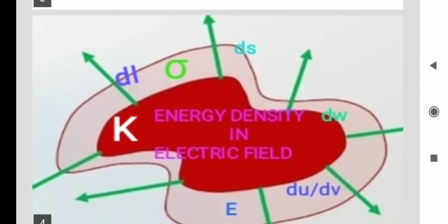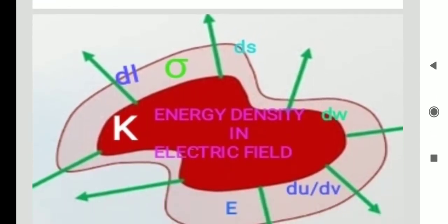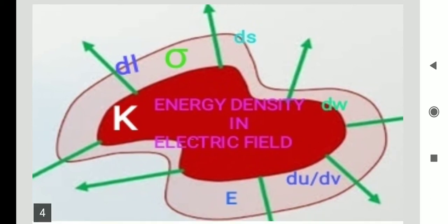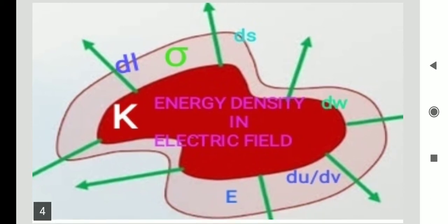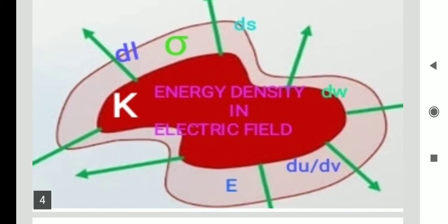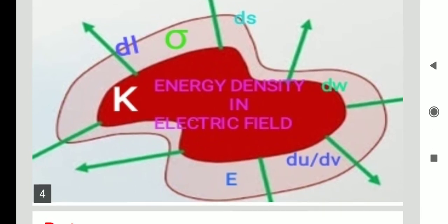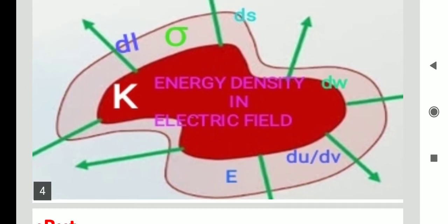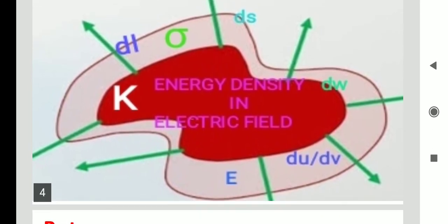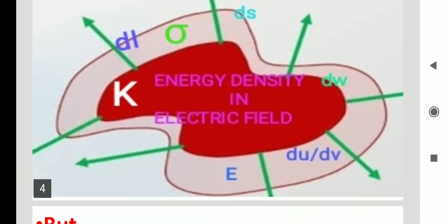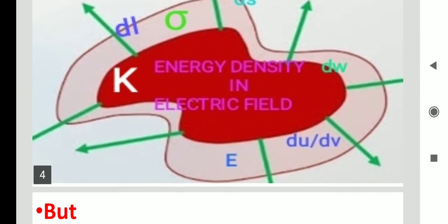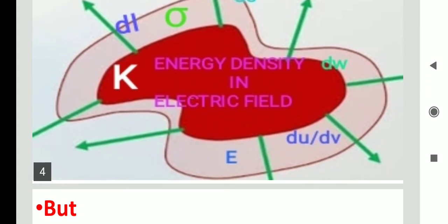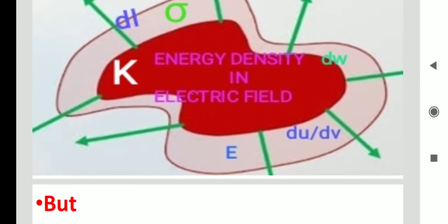From the figure for energy density in electric field, we consider: DL as the small length, sigma as the charge density, ds as the small surface area, dw as the small work done, du/dv as the energy stored, and E as the electric field.